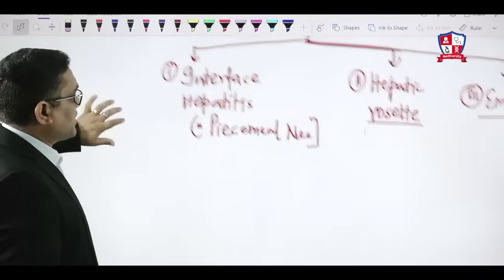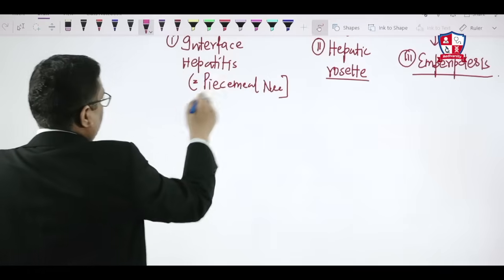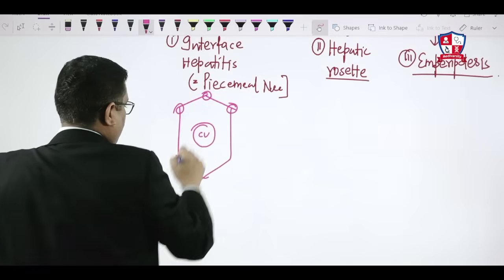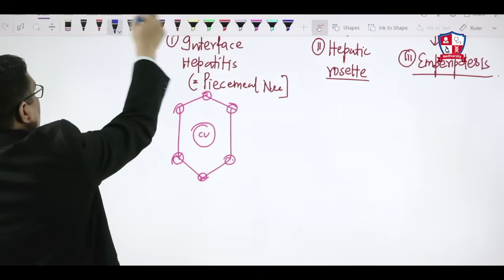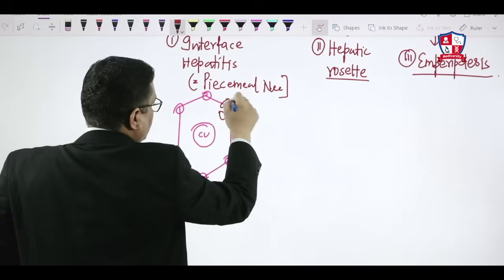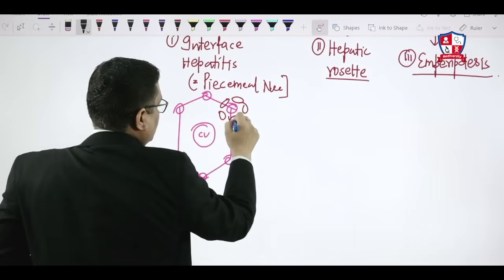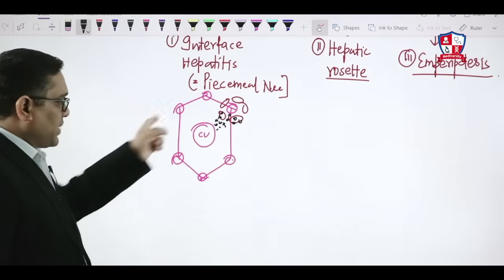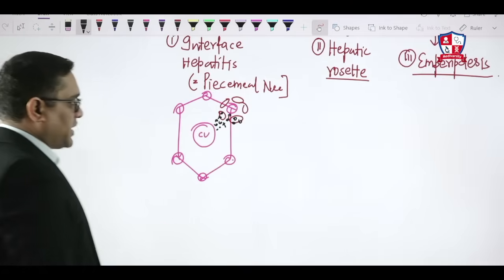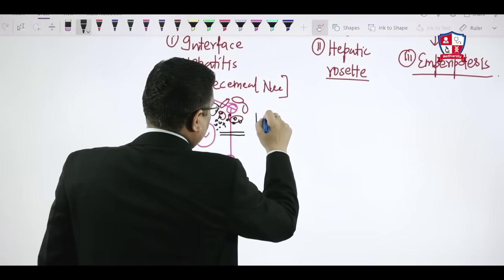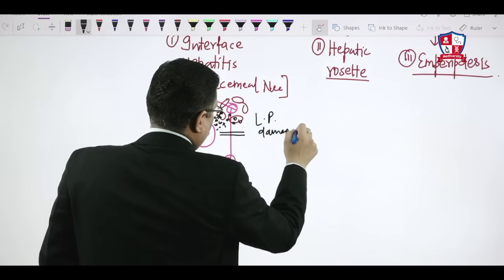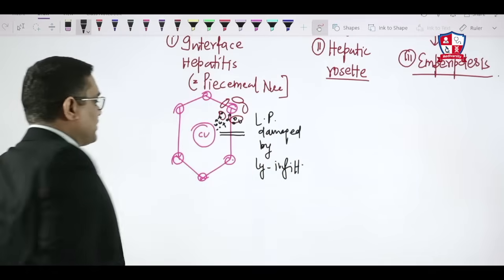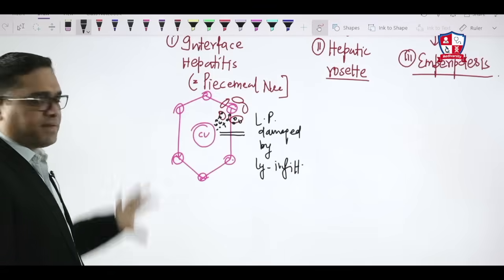Interface hepatitis: the liver has a portal tract and a central vein. A single layer of hepatocytes at the portal tract boundary is called the limiting plate. When lymphocytic infiltrates damage the limiting plate and move toward the pericentral area, that is called interface hepatitis or piecemeal necrosis.